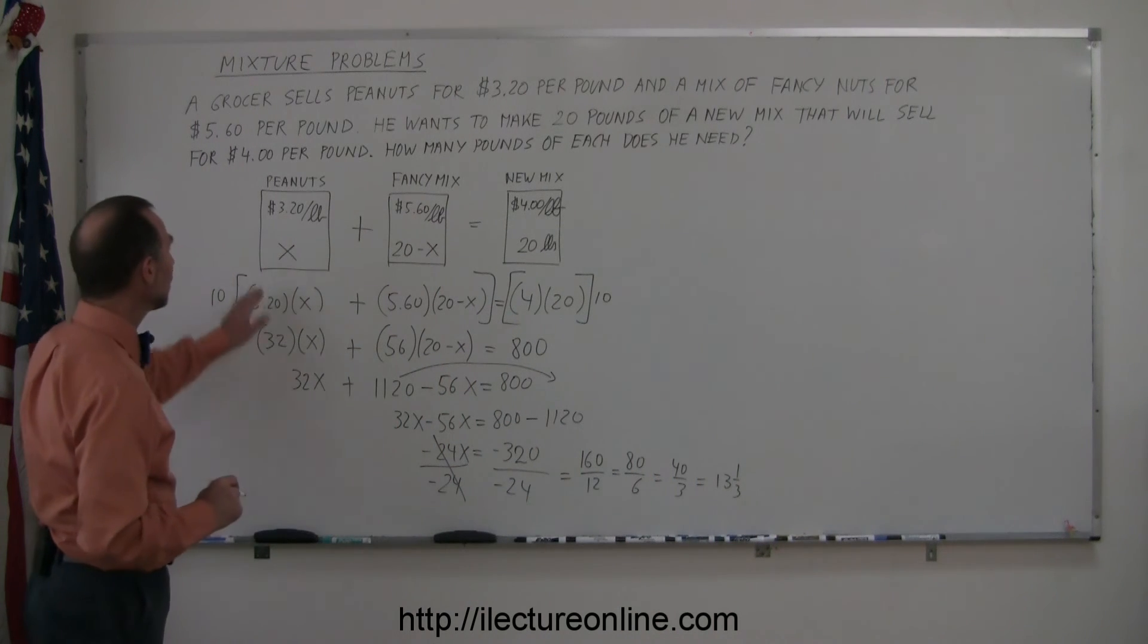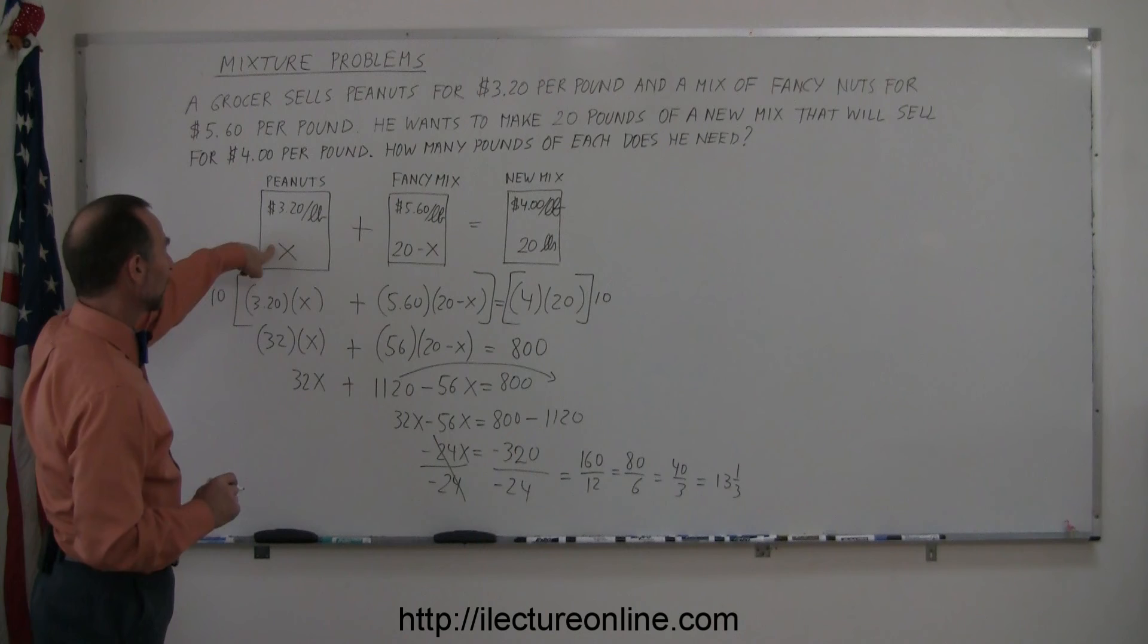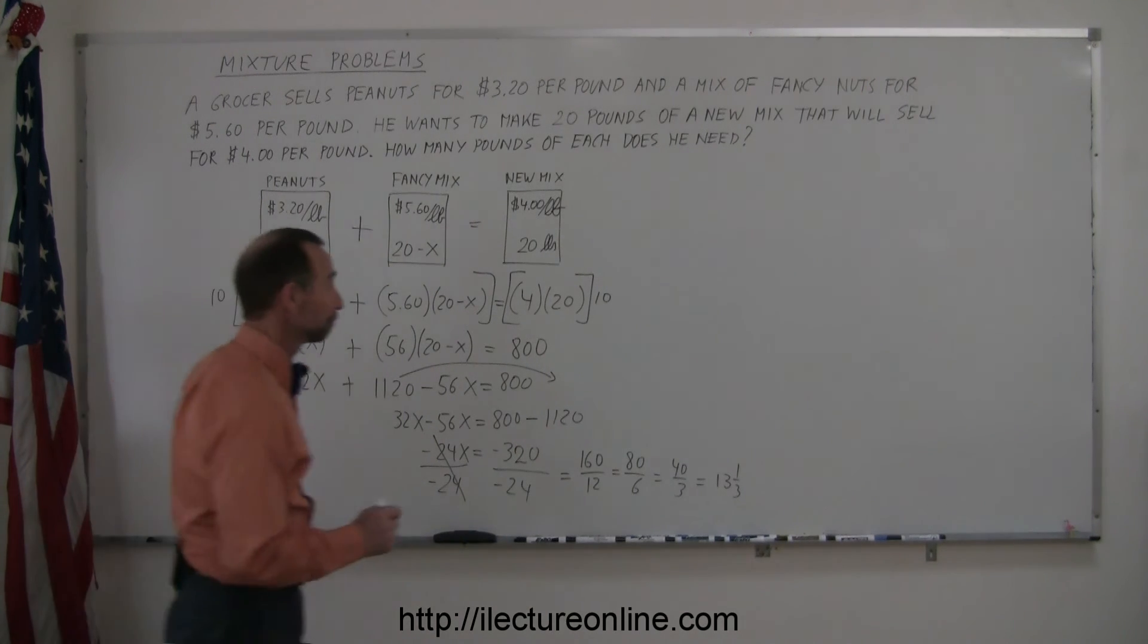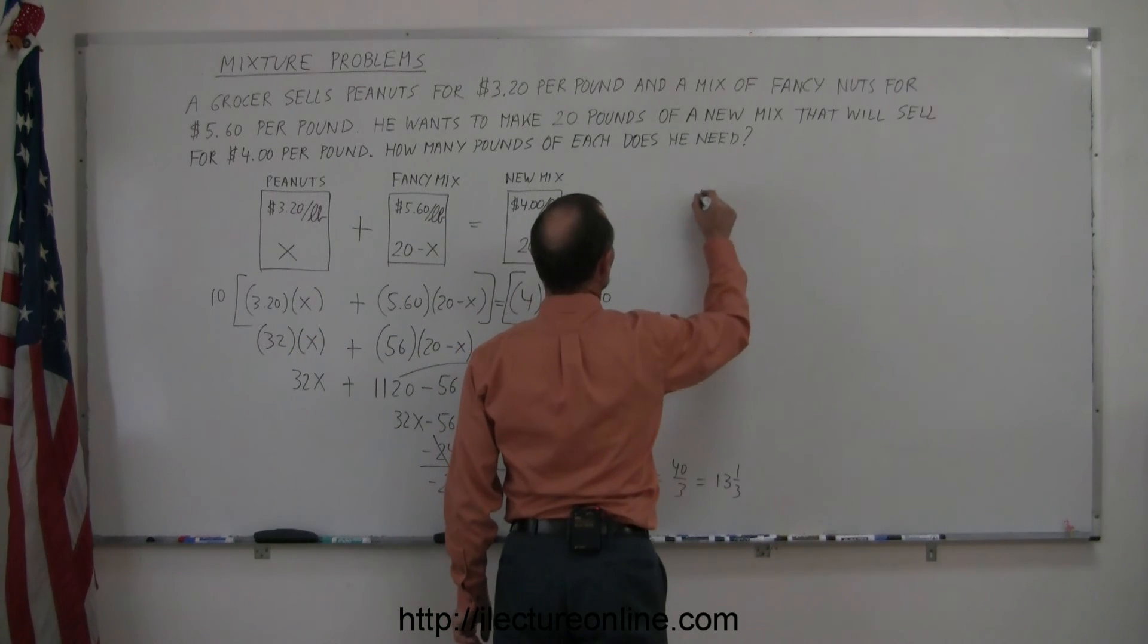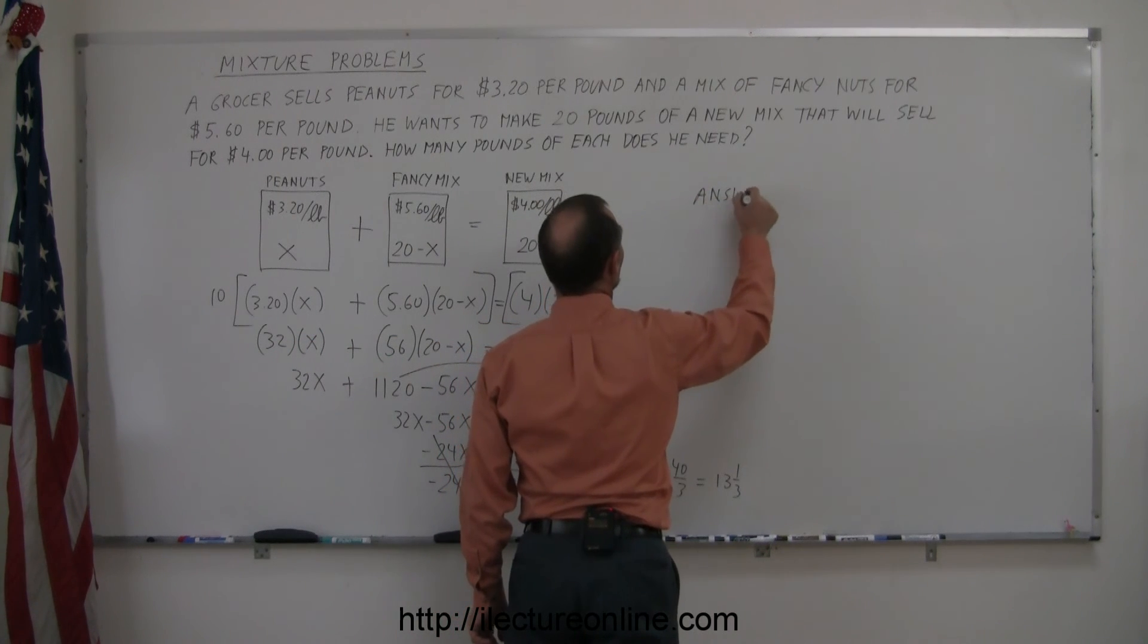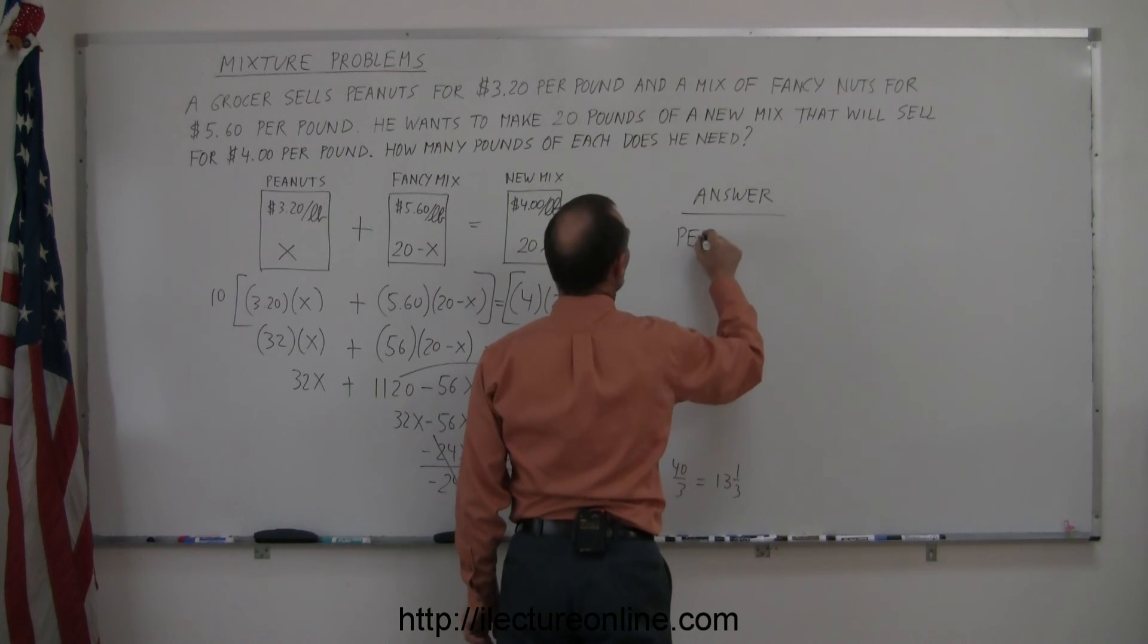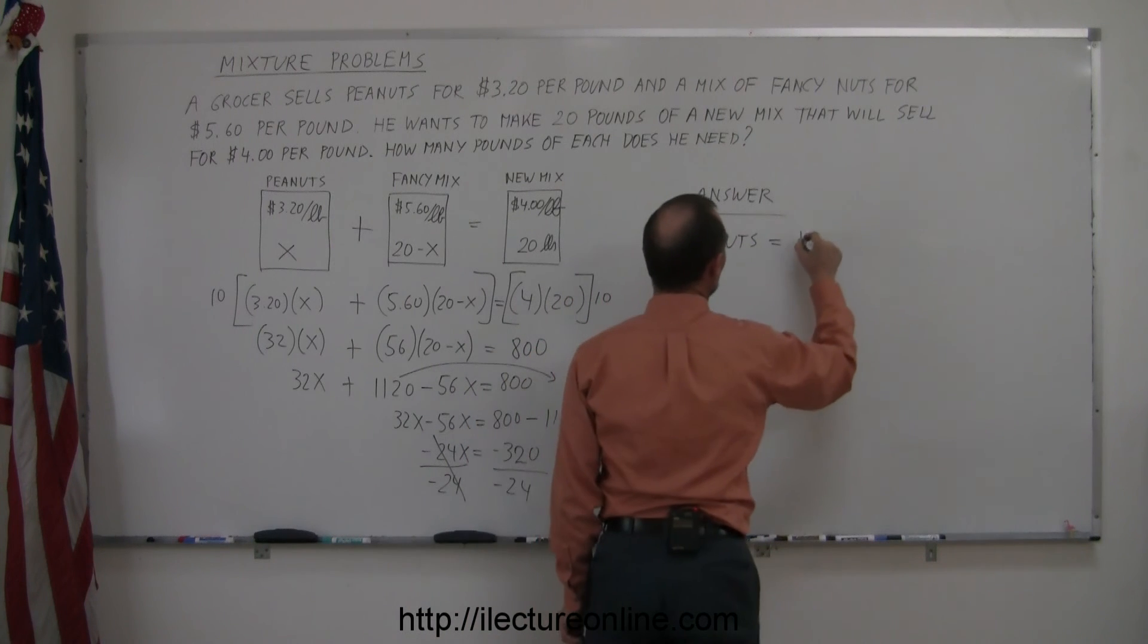That means we need 13 and a third pounds of the peanuts, and the remainder, 20 minus that, for the fancy mix. So the answer: of the peanuts we will need 13 and a third pounds.